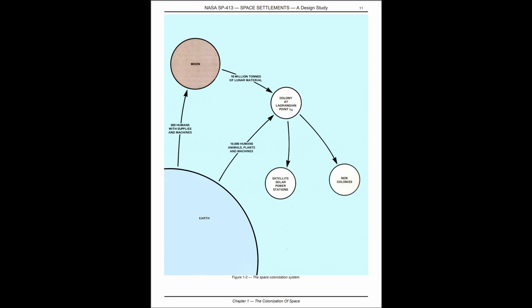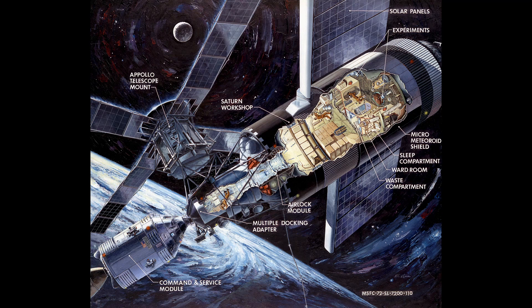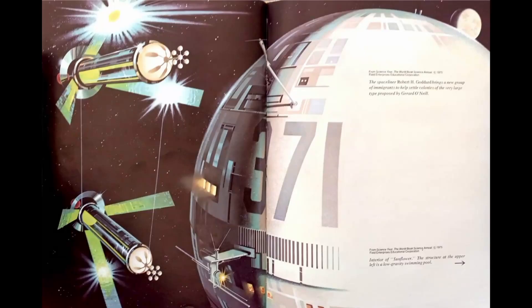So where do we go from here? There seems to be a large gap between the sort of tin can space stations that we've had a temporary presence on such as the International Space Station and the sort of settlements that can house thousands to millions of people over the course of their entire lives.